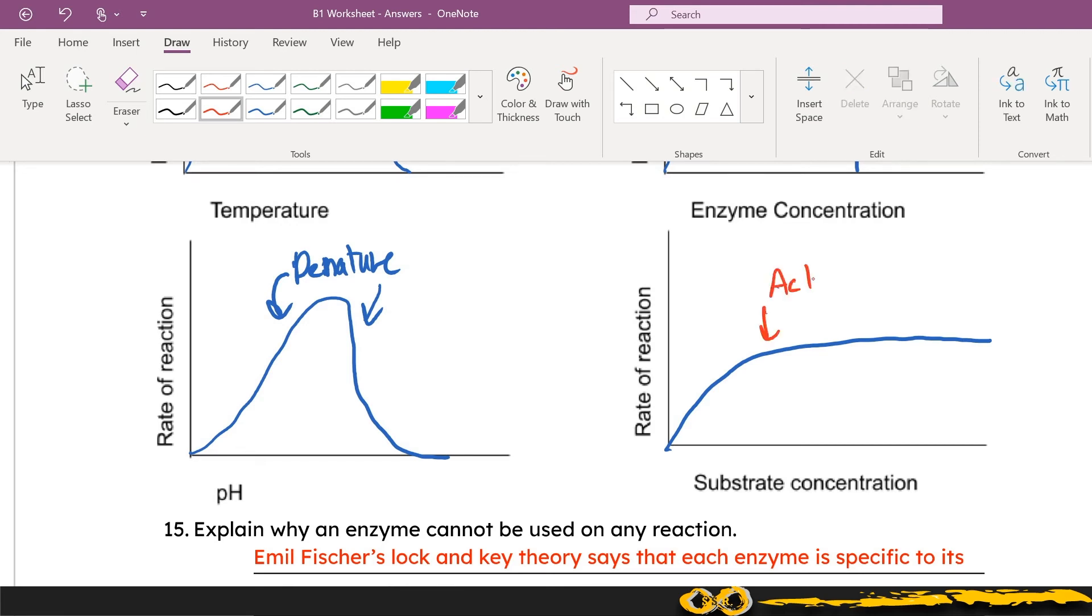In terms of substrate concentration, remember that once the active sites are full or saturated then the reaction rate is no longer able to increase even if you increase the amount of that substrate. This leads into some application questions later on where you discuss optimum growing conditions for plants, for example in commercial greenhouses.